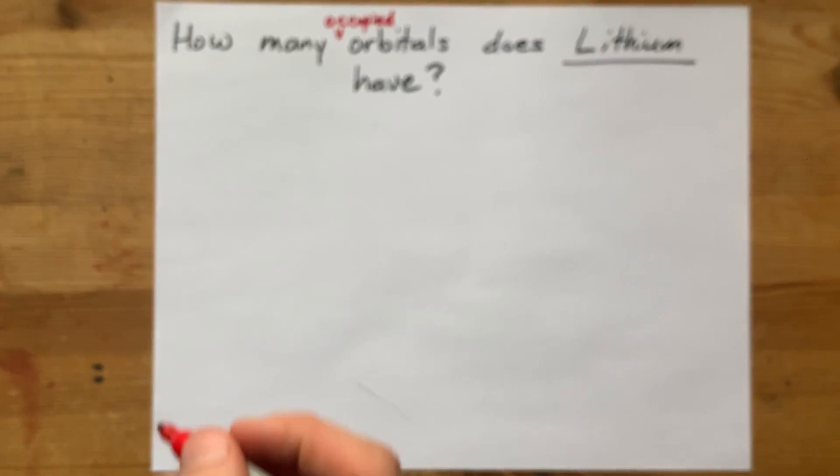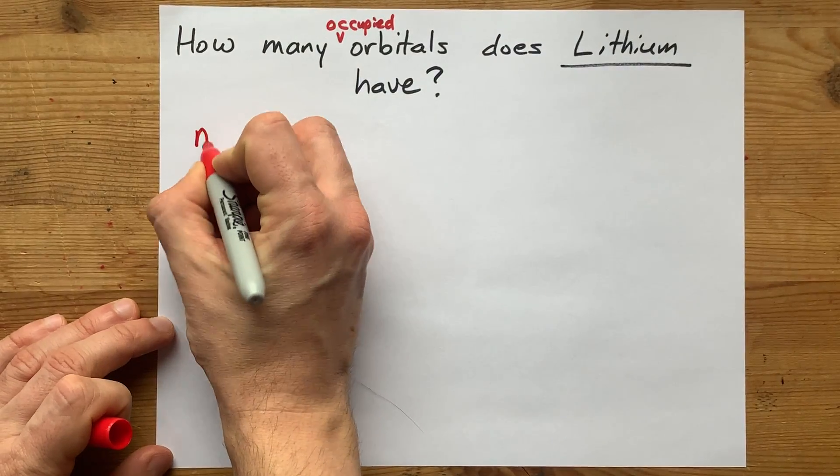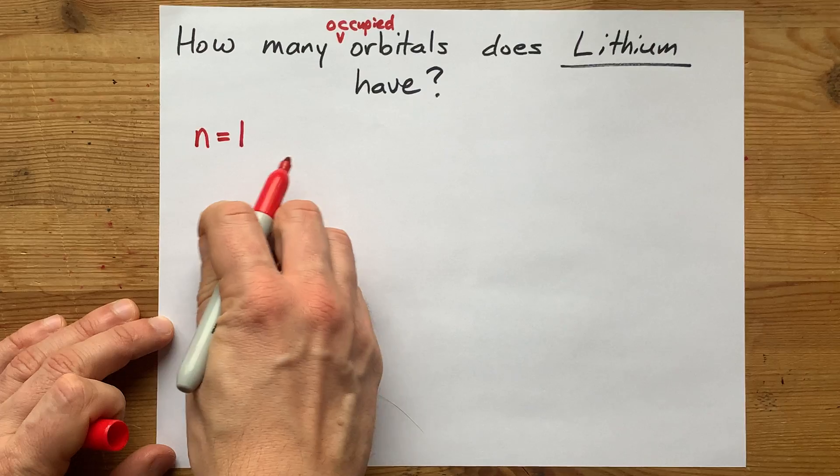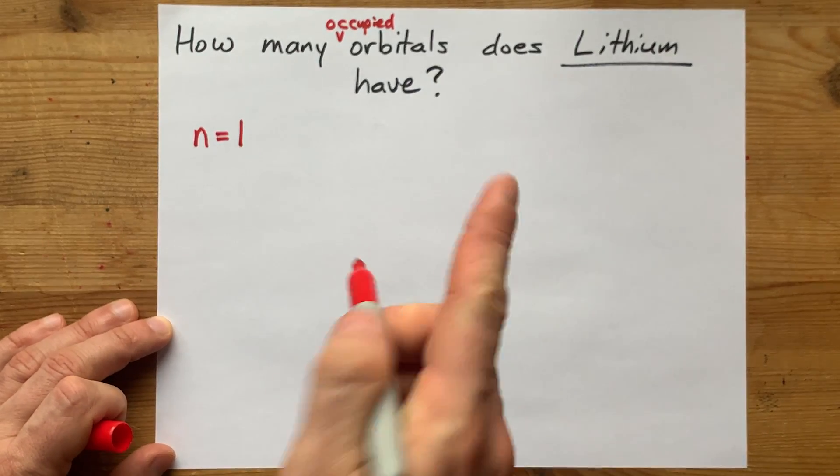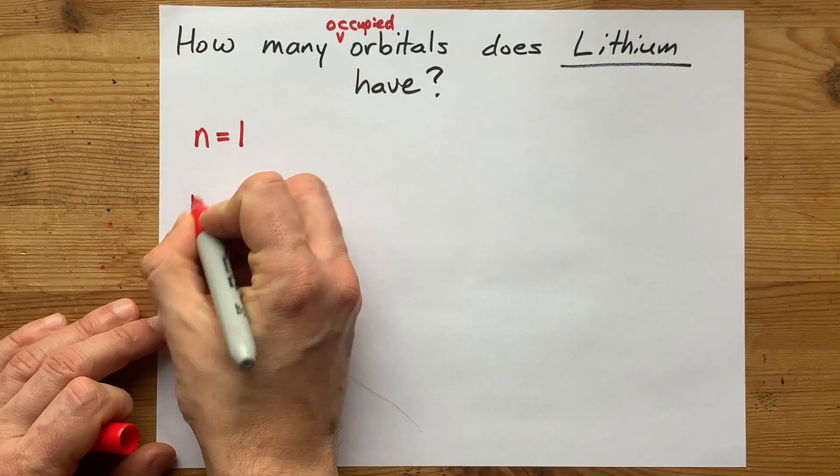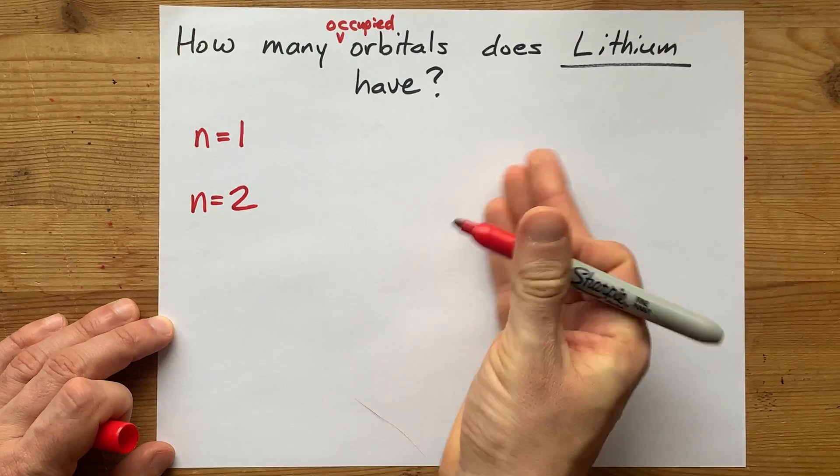The fact that it's in the second row means that the first row, n equals 1 first shell, is full, and then we have some electrons in n equals 2.